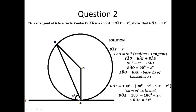So, if the total angle here is 90 degrees from what we have just proved, that means if this is X degrees, you can find this angle here, this small angle, and that would be 90 minus X.